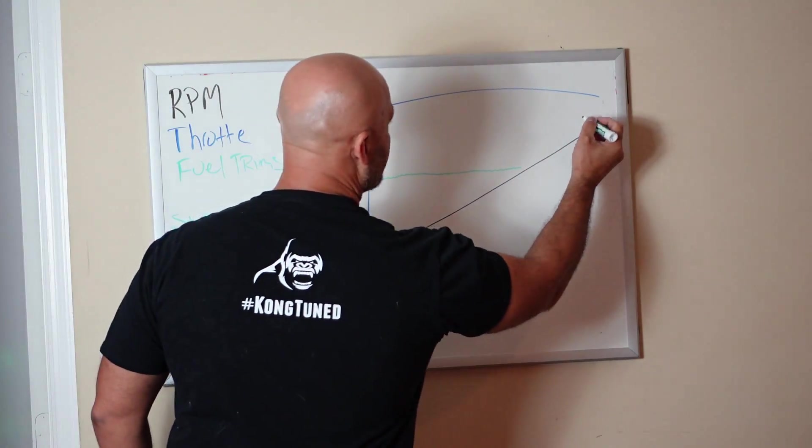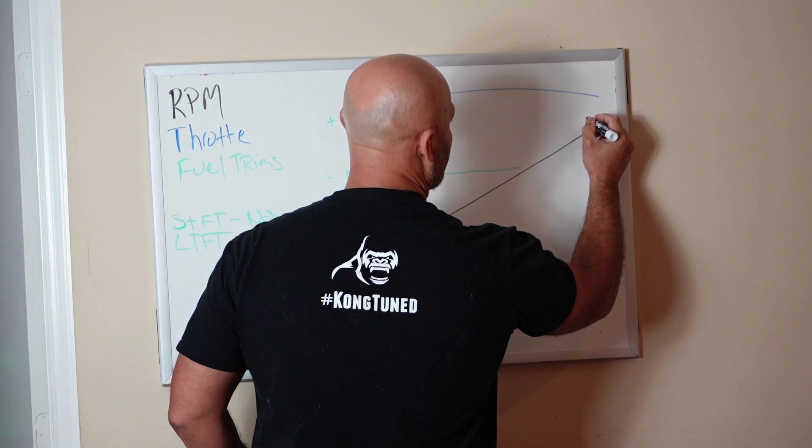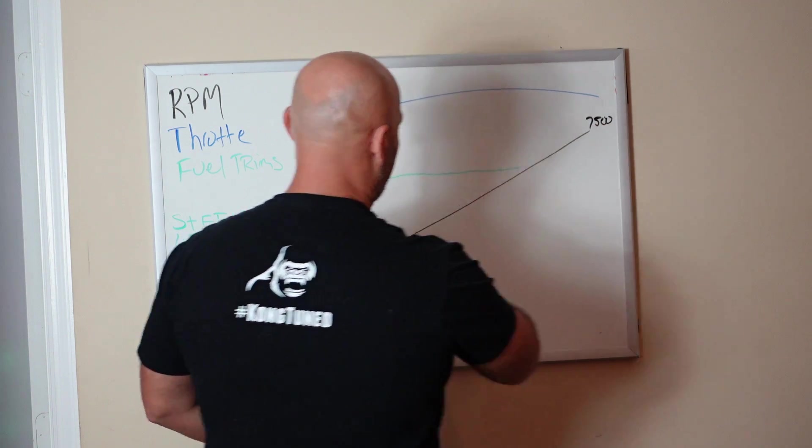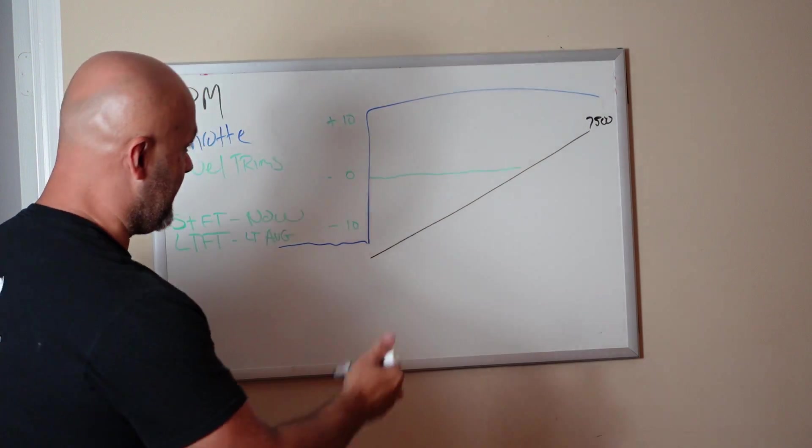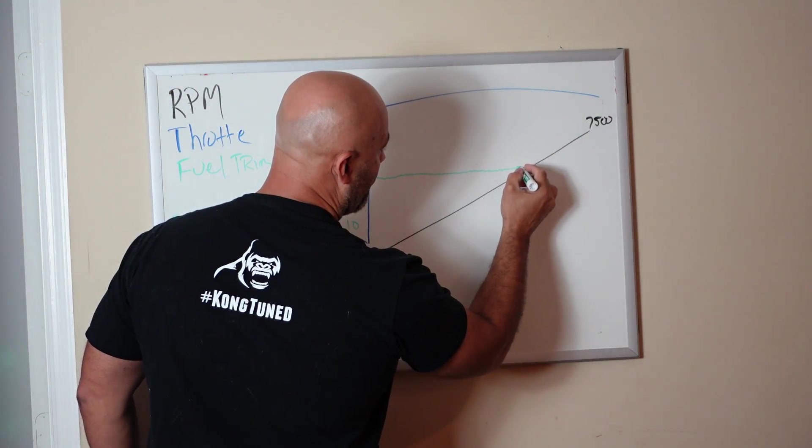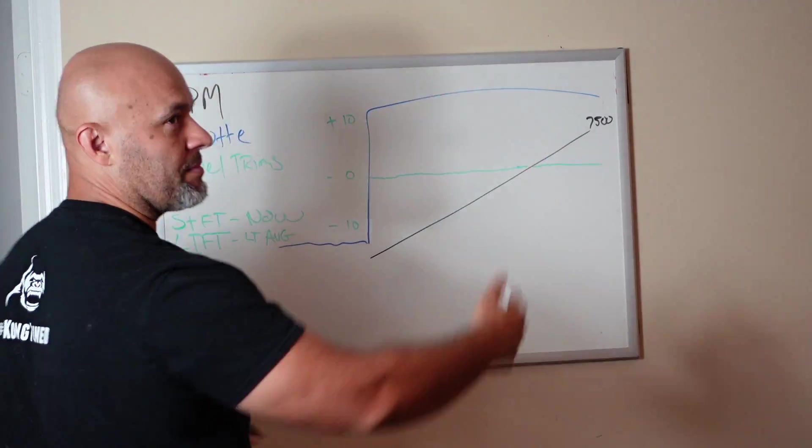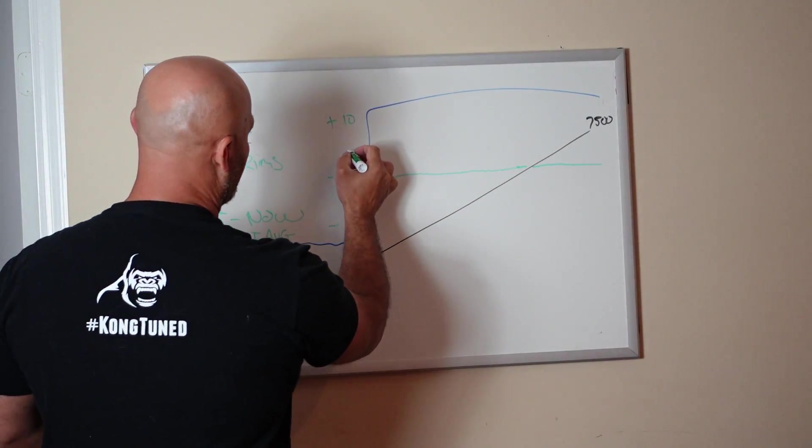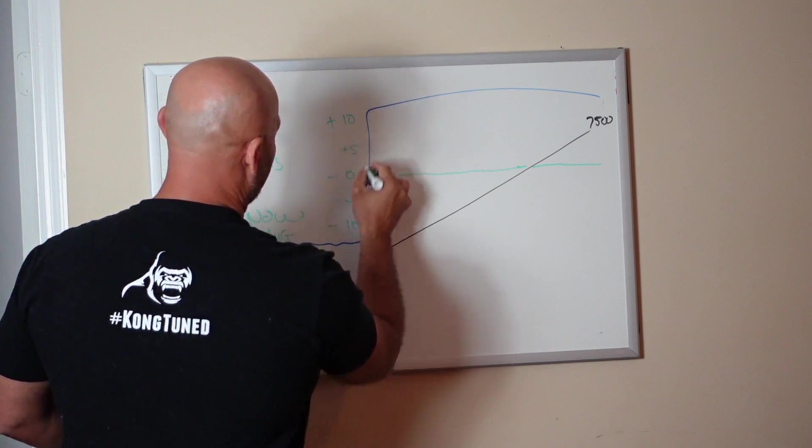Let's say this is 7500 RPM. Fuel trims being good like that, I have no issue. If this carries out all the way through the WOT log, I'm like, dude, your fuel trims are dead nuts. I'm willing to do plus/minus 5%.